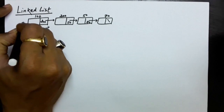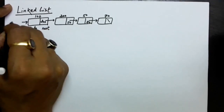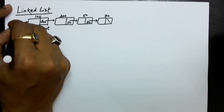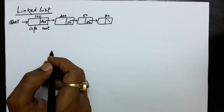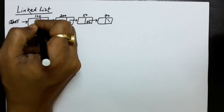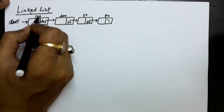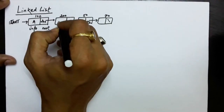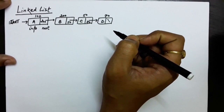Now we should have an external pointer that will keep the address of the first node. Let's say 'start' is a variable keeping the address of the first node. So start contains 100 because the address of this node is 100. We should have one pointer or variable that keeps the address of the first node. These are the information of the nodes: A, B, C, D.